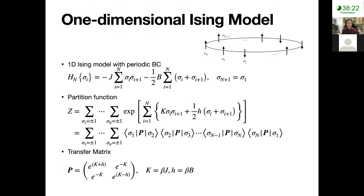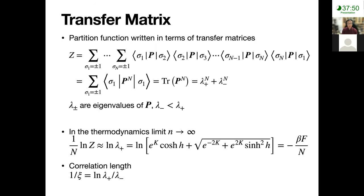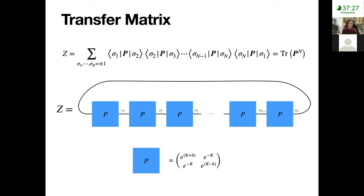Let me start with the 1D Ising model. This is a textbook model that everybody should have seen at some point in their career. Consider the 1D Ising model with periodic boundary condition — in this case you can write the partition function in terms of the product of transfer matrices. By knowing and diagonalizing the transfer matrix, you get a lot of information: the partition function, free energy in the thermodynamic limit, and the correlation length. In the pictorial language of tensor networks, you can write your transfer matrix or partition function as a product of these transfer matrices.